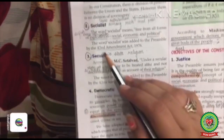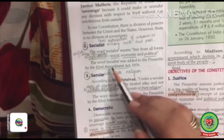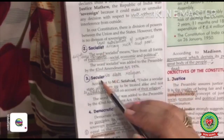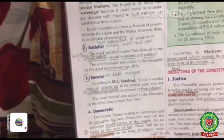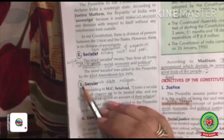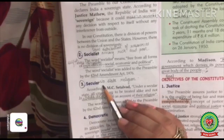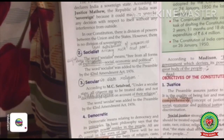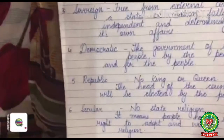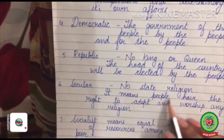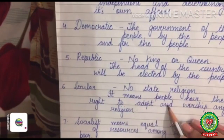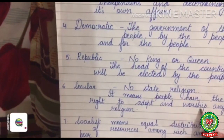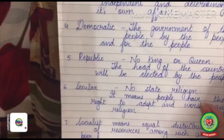But after the 42nd Amendment, two words were added: number one, Socialist; and number two, Secular. Secular means no state religion. People have the right to adopt and worship any religion of their choice.